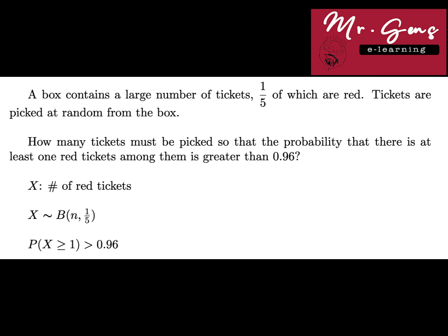Probability of random variable X is greater than or equal to one, and we need to find the least number of red tickets providing that probability more than 0.96. Let's start with the probability distribution graph on an external source.